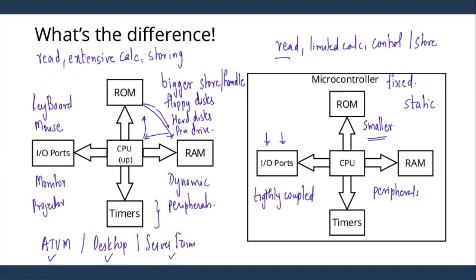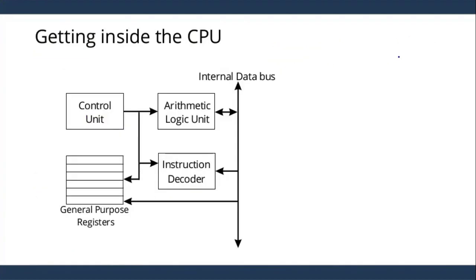The brain of both of them is nothing but the CPU — the central processing unit. Let us look at how a central processing unit works. Take an example: I want to add two numbers x plus y. How does the CPU operate? This instruction of adding — let us say an instruction 'add x plus y' — will be given to the CPU.